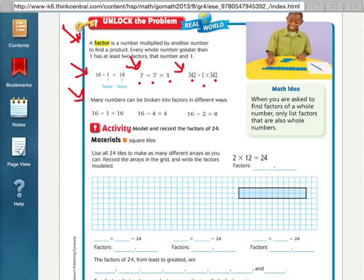It says here that many numbers can be broken into factors in different ways. So going back up here, you can always do 1 times that number to get the product. You can also sometimes do other numbers. So for example, if we're trying to find the factors of 16, we know we can do 1 times 16. You can also get 16 by doing 4 times 4 and 2 times 8. So there's other ways to multiply numbers to get up to 16.